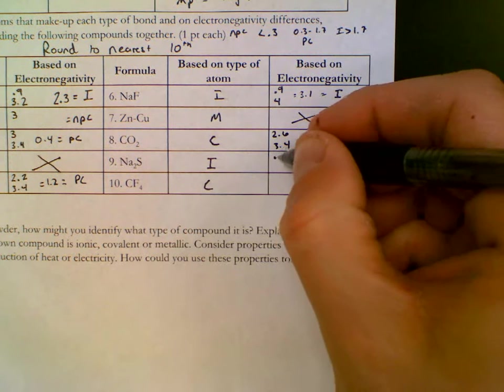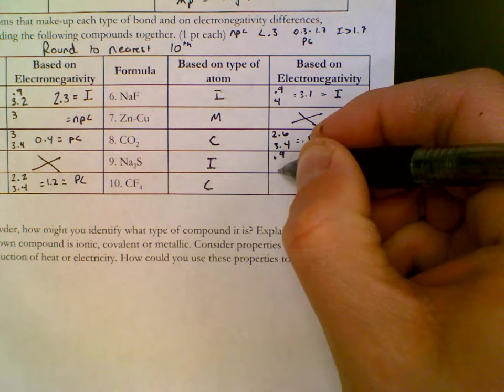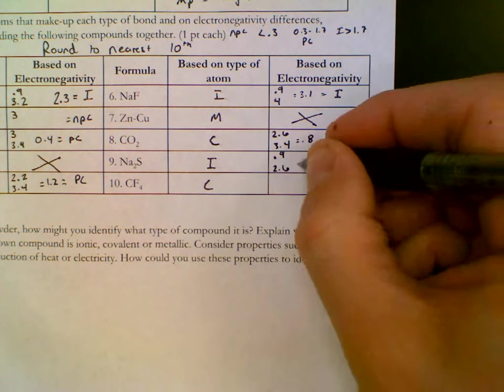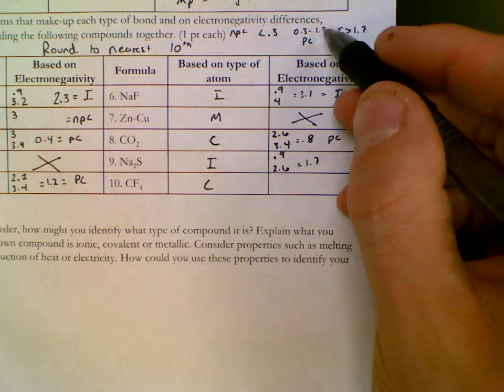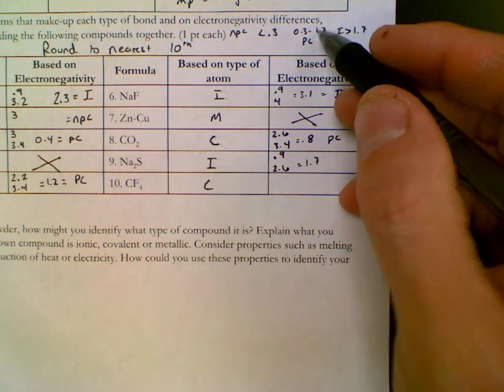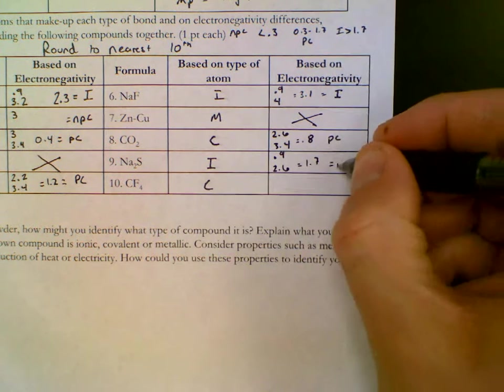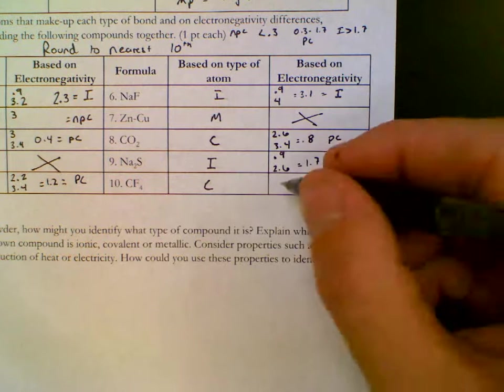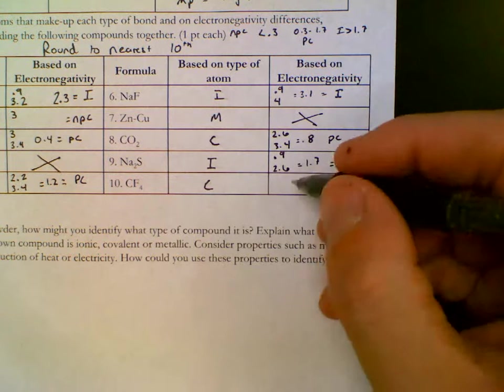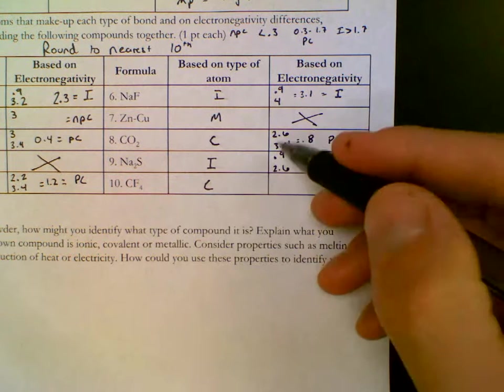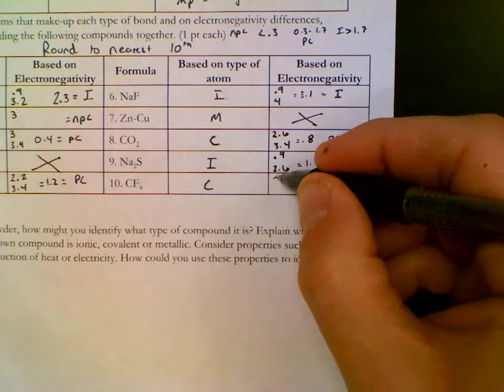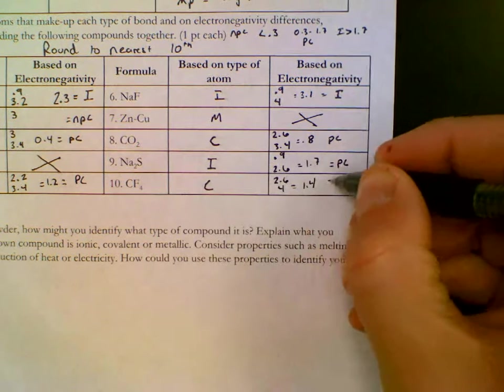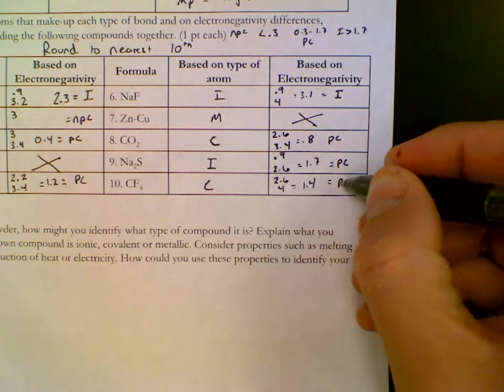Sodium, we've done a number of times, 0.9. And sulfur, our table says, is 2.6, so that's 1.7. That's right on the boundary, very top edge of being polar covalent, but not quite ionic. So it's very close to being ionic, which means it's got a lot of ionic character. And then carbon we've just done up here, 2.6. Fluorine we've done is 4. That's a 1.4 difference, which makes this polar covalent.